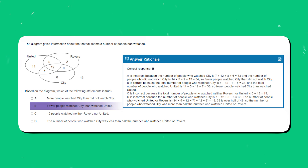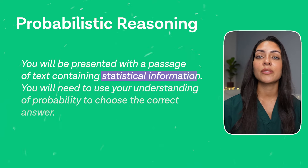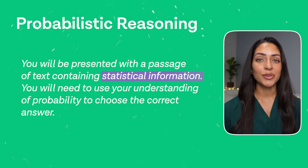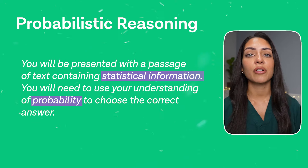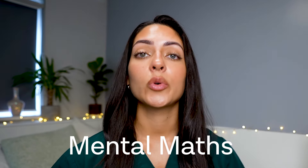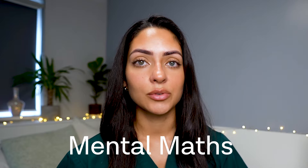The final question type is probabilistic reasoning. Here you will be presented with a passage of text containing statistical information, and you will need to use your understanding of probability to choose the correct answer. You don't necessarily need advanced knowledge of statistics for this question type, but making sure that you brush up on your mental maths will be really helpful. Let's take a look at another example.